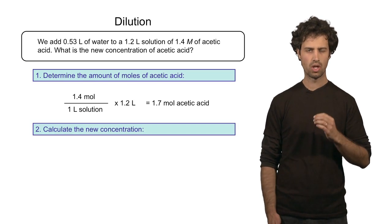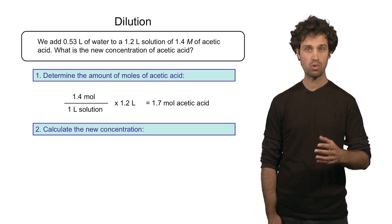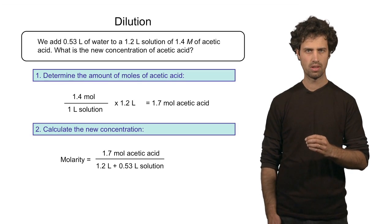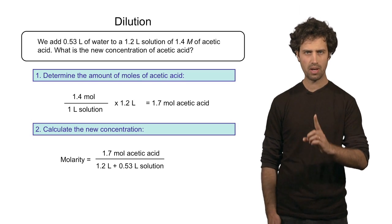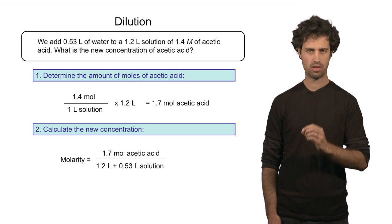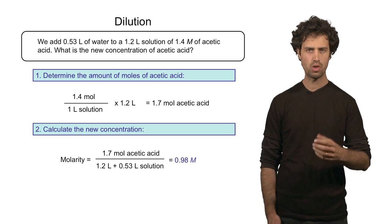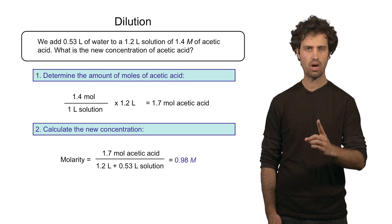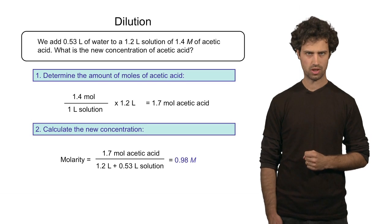Now upon dilution the volume will change, the number of moles will not. So the new concentration, the molarity, is 1.7 mol over the new volume. The new volume is 1.2 liters plus the added volume, which is 0.53. Completing this calculation will give me a new concentration, which is 0.98 molar. Note that the concentration after is less than the concentration before.